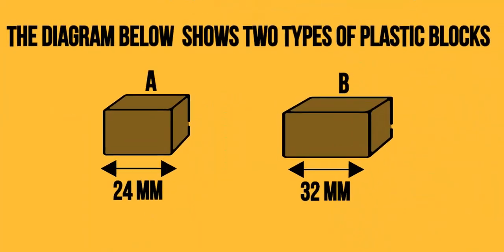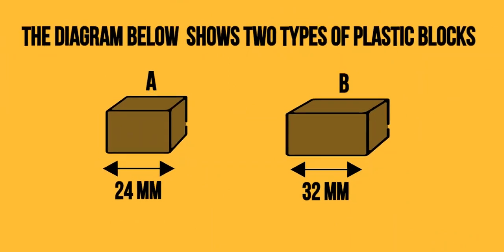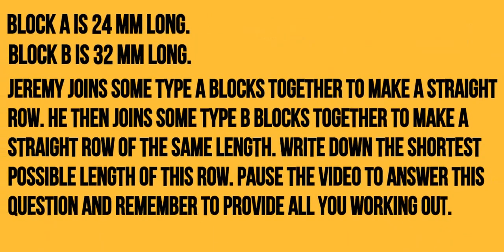The diagram below shows two types of plastic blocks. Block A is 24mm long. Block B is 32mm long. Pause the video to answer this question and remember to provide all your working out.